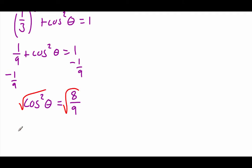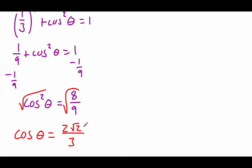We want cosine to be all by itself, so I'm going to square root both sides. The left-hand side is now the cosine of theta. Similar to when we're squaring fractions, the way we do square roots is we're going to square root the top and the bottom. The bottom is going to be really easy because the square root of 9 is just 3. The top might be a little bit trickier, but we can simplify the square root of 8 down to 2√2.